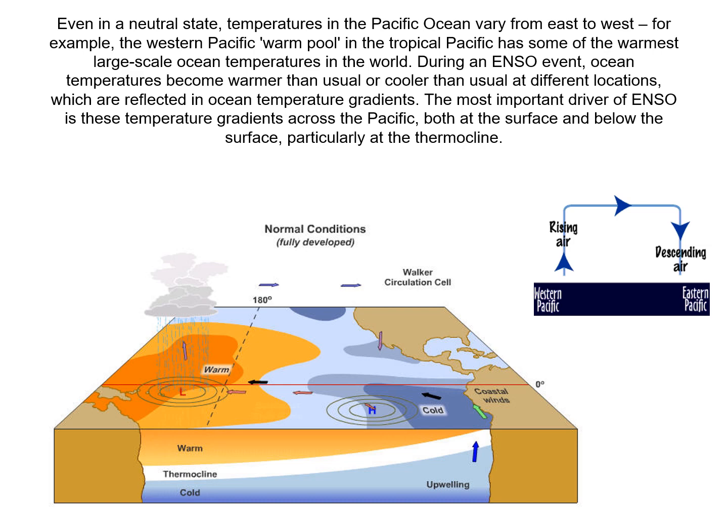The El Niño of 1972-73 reduced the annual Peruvian anchovy catch from 10.3 million metric tons in 1971 to just 4.6 million metric tons in 1972. Since much of this fish harvest is converted into fish meal and exported for feeding livestock and poultry, the world's fish meal production in 1972 was greatly reduced. Countries such as the US that rely on fish meal for animal feed had to use soybeans as an alternative, which raised poultry prices in the United States by more than 40 percent.